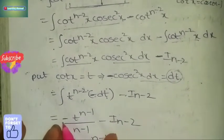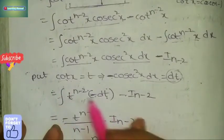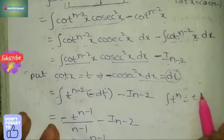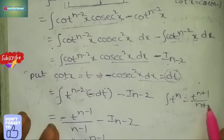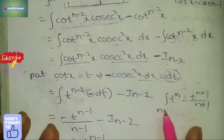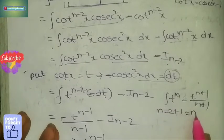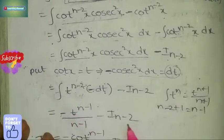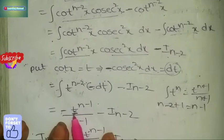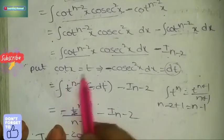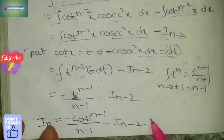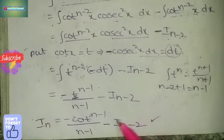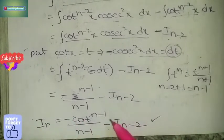Taking out the negative, integrate t^(n-2): by power formula, t^(n-2+1)/(n-2+1) = t^(n-1)/(n-1). So the result is -t^(n-1)/(n-1) minus I_(n-2). Substitute back t = cot x. The cot reduction formula is: I_n = -cot^(n-1) x / (n-1) minus I_(n-2).